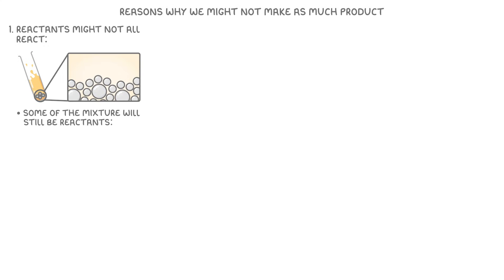Now there's a whole range of reasons why we might not make as much product as we expect. But there are 3 particularly common ones that you need to know. The first is that the reactants might not all react. So at the end, some of the mixture will still be reactants. This could happen if the reaction is particularly slow, so it just hasn't had enough time to fully react, or because it's a reversible reaction and it's reached equilibrium.